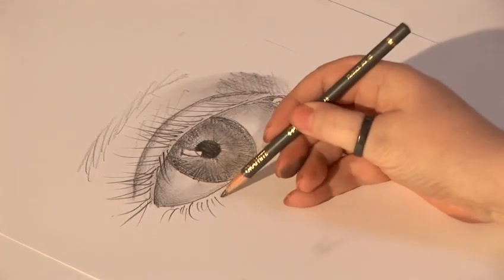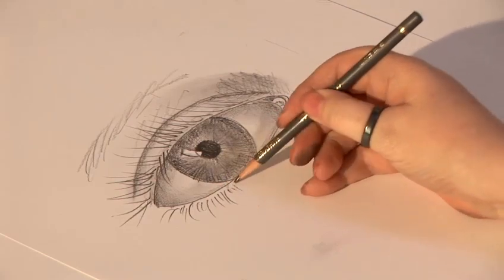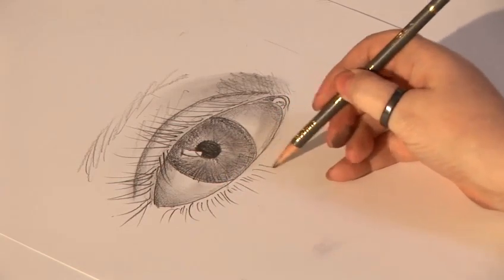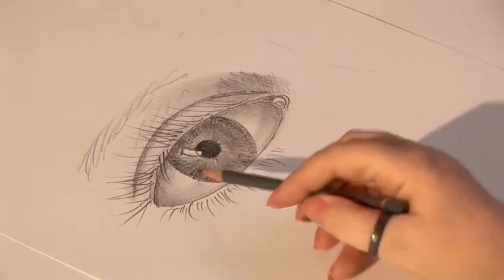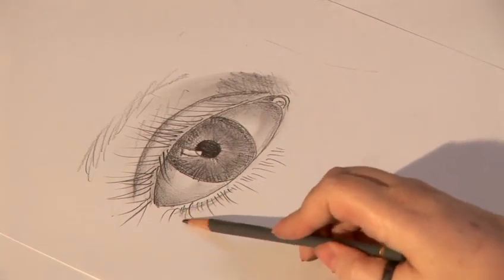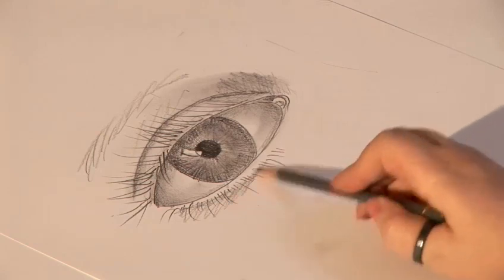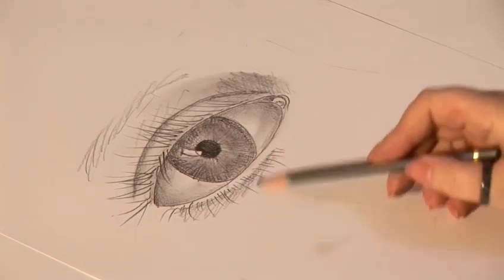And we can do the same below the eye, just here and there, little lines curved, some little stumpy ones, very loose and random. And let's have a bit of shading under here as well, just to add a bit of realism to the under part of the eye.